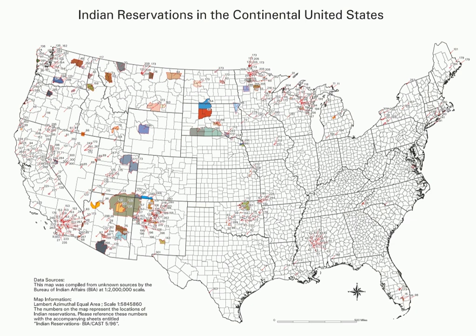Many Native Americans who live on reservations deal with the federal government through two agencies: the Bureau of Indian Affairs and the Indian Health Service. The standard of living on some reservations is comparable to that in the developing world, with issues of infant mortality, life expectancy, poor nutrition, poverty, and alcohol and drug abuse. The two poorest counties in the United States are Buffalo County, South Dakota, home of the Lower Brule Indian Reservation, and Oglala Lakota County, South Dakota, home of the Pine Ridge Indian Reservation. It is a common conception that environmentalism and a connectedness to nature is ingrained in Native American culture, though cultural historians have set out to reconstruct this notion as a culturally inaccurate romanticism.